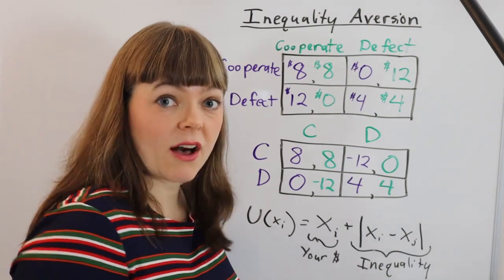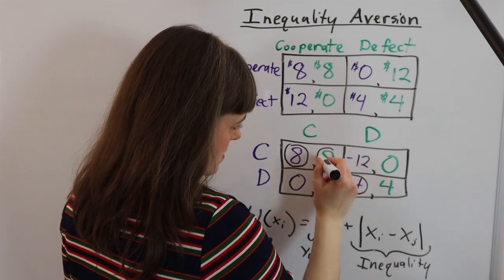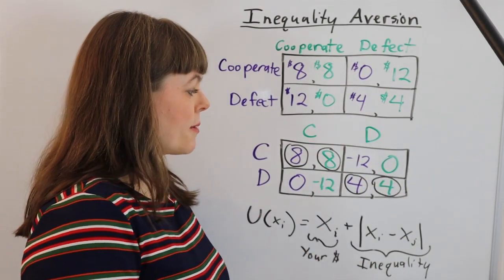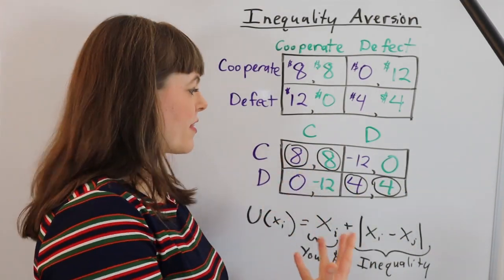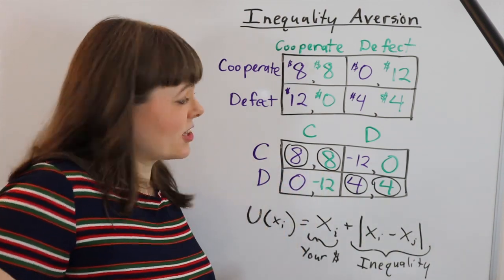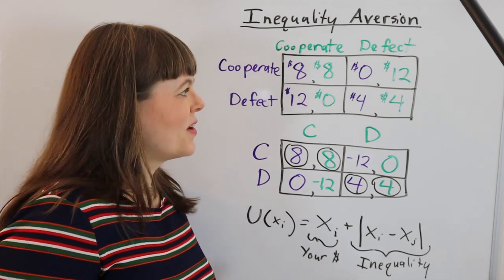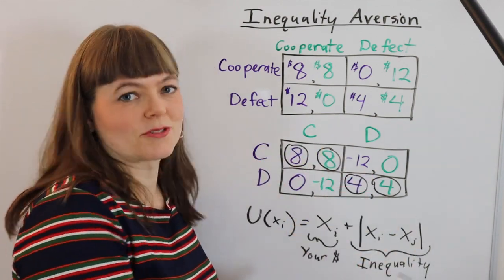Now we can recalculate the Nash equilibrium in this situation. Now there are two Nash equilibriums, but one of them is obviously better than the other, so the two people might be way more likely to end up here. This could be a very simple explanation of what we see when we run these experiments in the classroom.